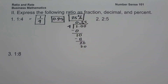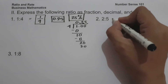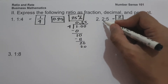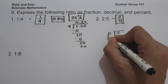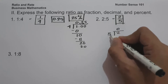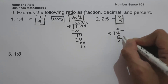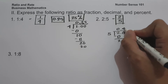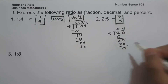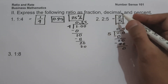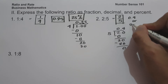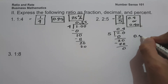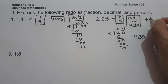On number 2, we have 2 is to 5. In fraction form, that is 2 over 5. To write it as a decimal, we divide 2 by 5. 20 divided by 5 is 4, so 2 is to 5 in decimal is 0.4 or 0.40. To write this as a percent, we move two decimal places to the right, giving us 40 percent.